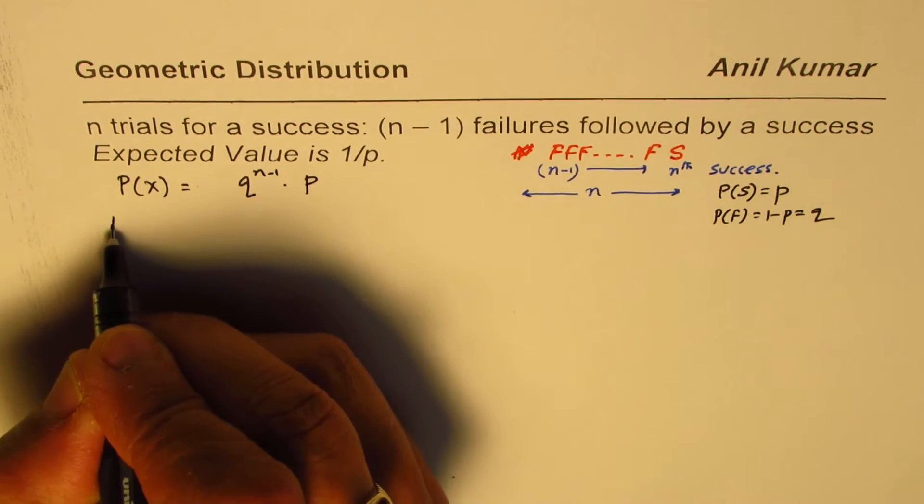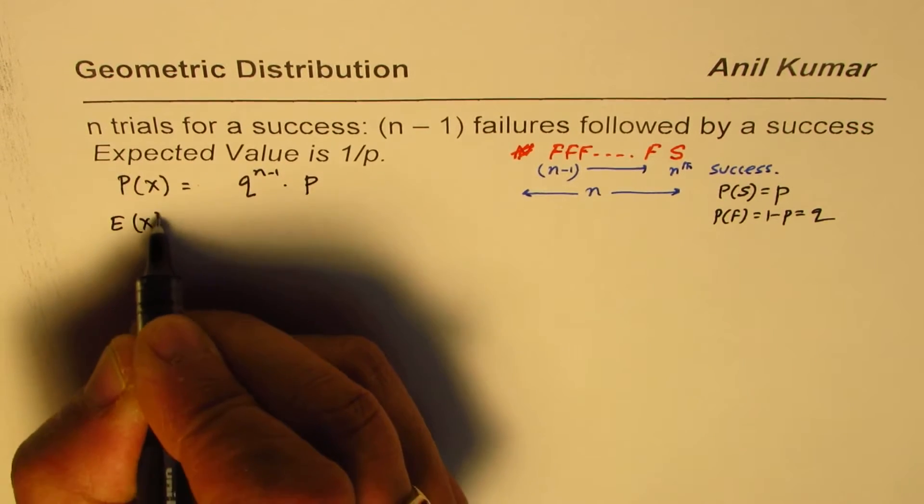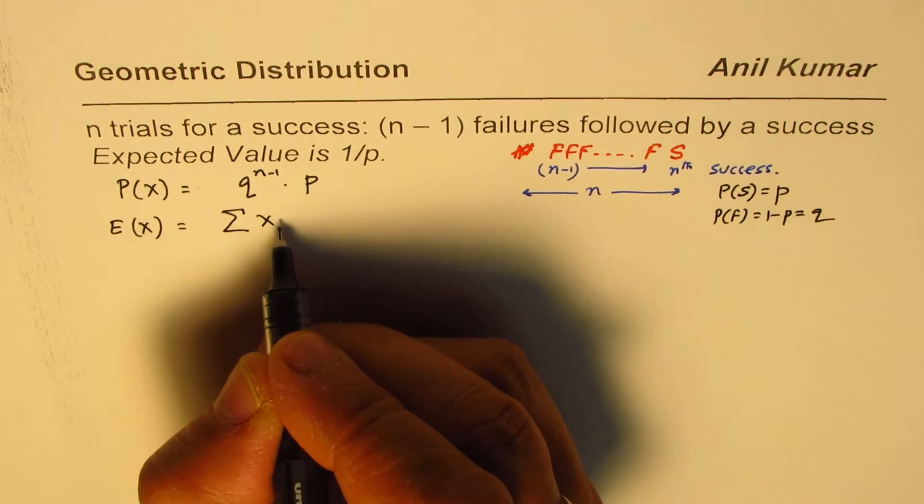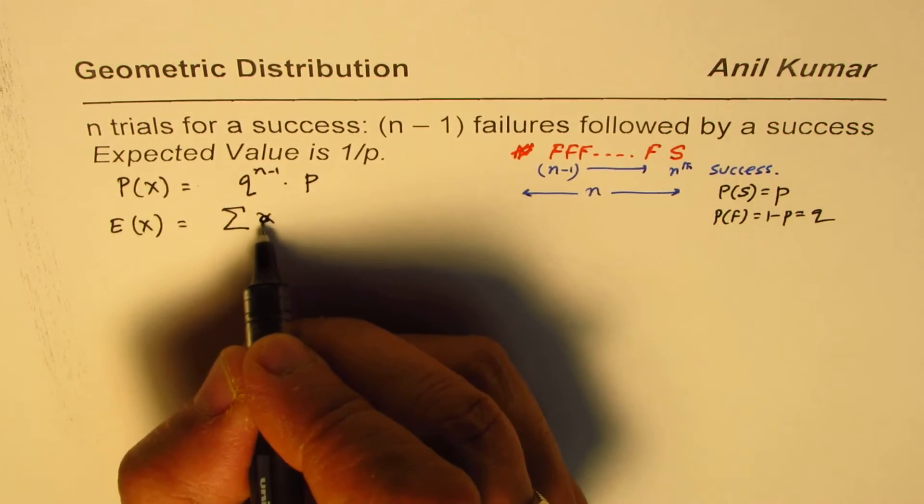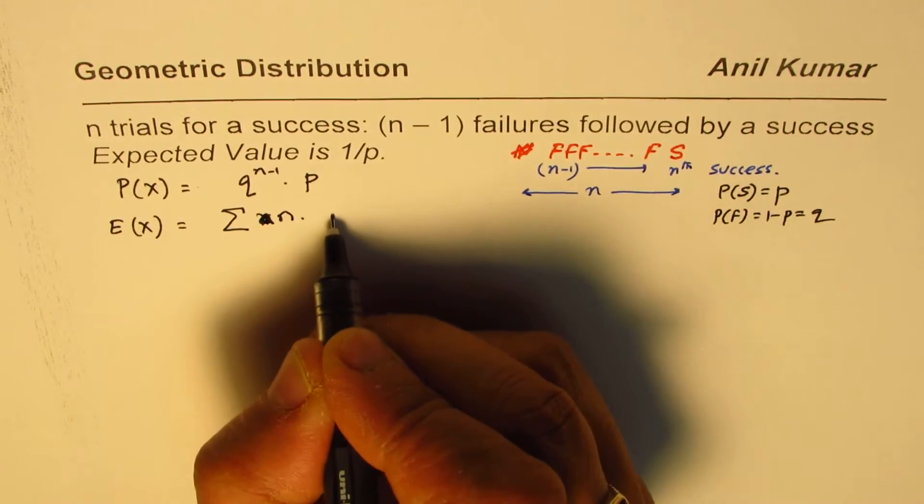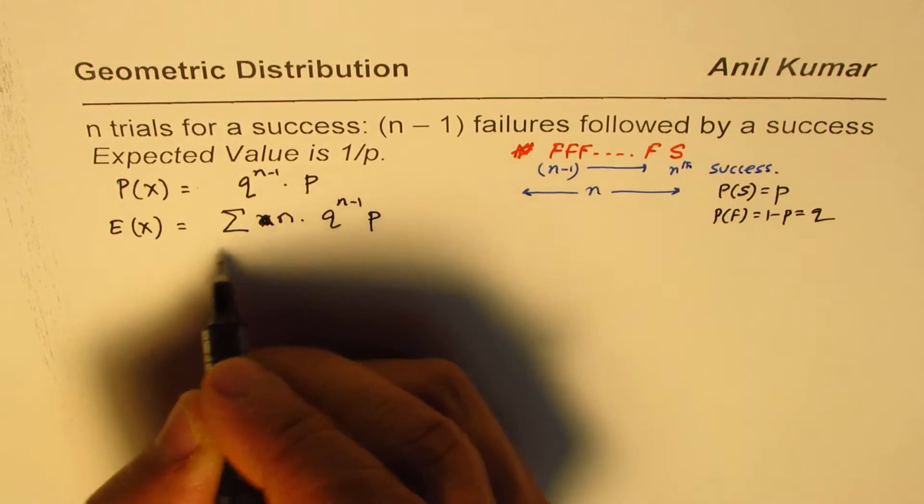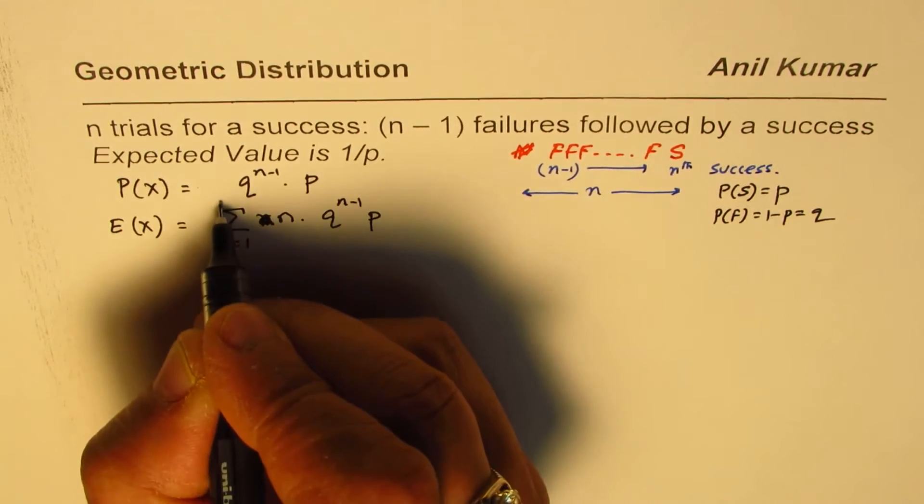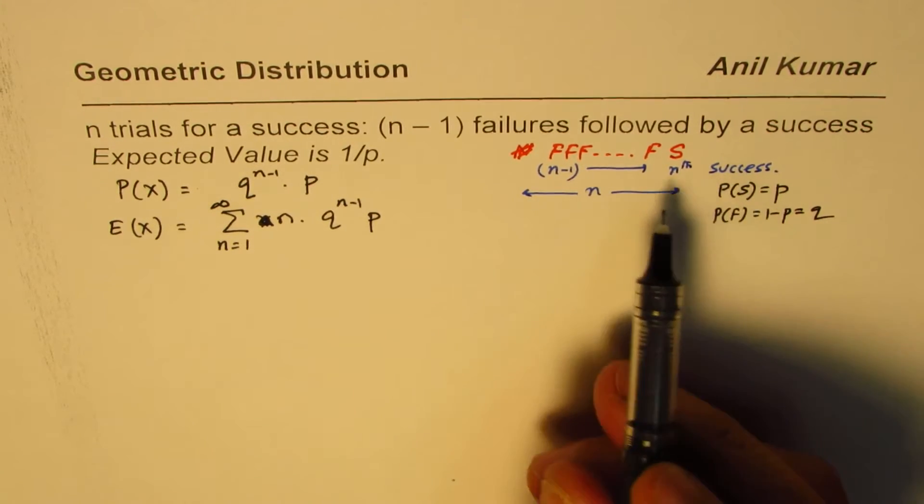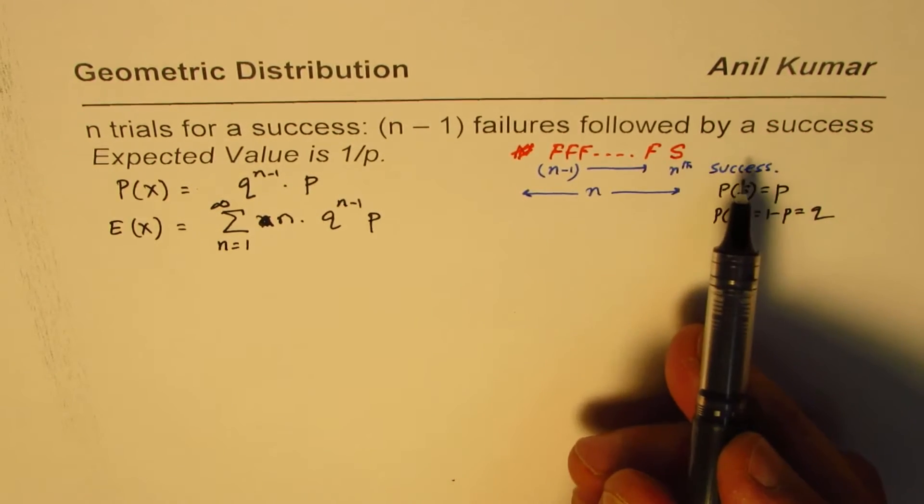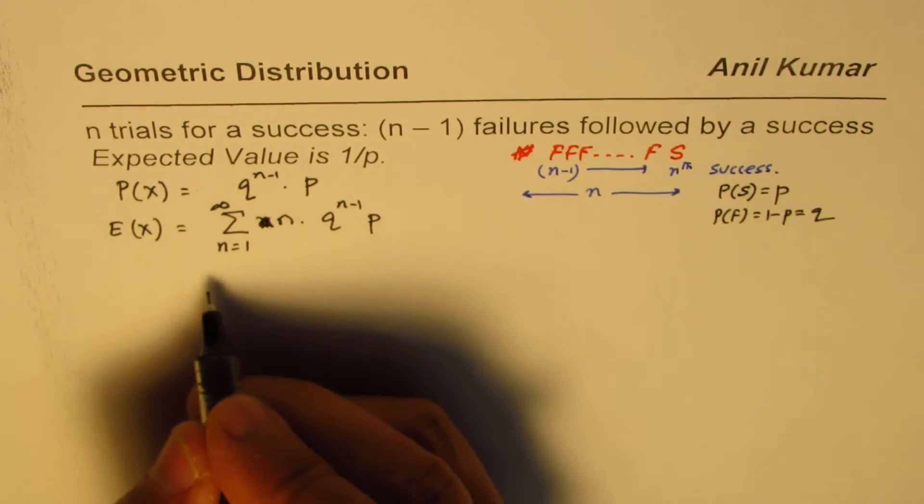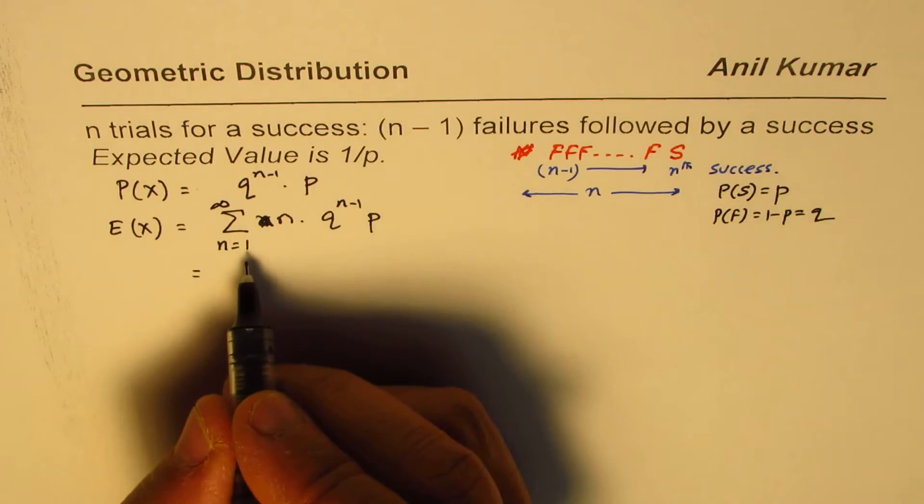The expected value will be equal to sum of n times Q to the power of n minus 1 times P, where n equals 1 to infinity. This can go on till infinity since we may not get any success at the end. So we want to figure out what this sum is. Let us expand this.